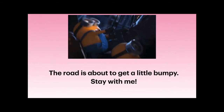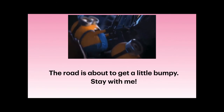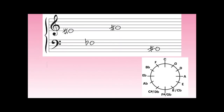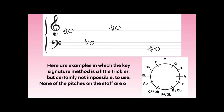Okay, hang on — the road is about to get a little bumpy. Stay with me. Here are examples in which the key signature method is a little trickier, but certainly not impossible to use. None of the pitches on the staff are on our major circle of fifths, so we can't automatically look at our circle of fifths to determine what the key signature would be for any of these given pitches.